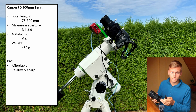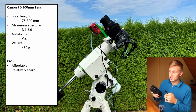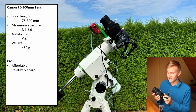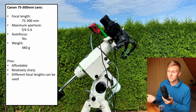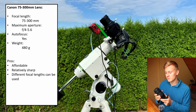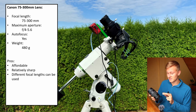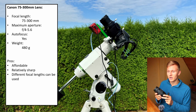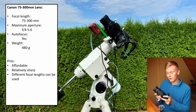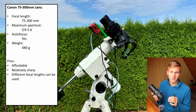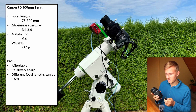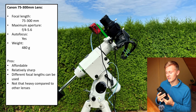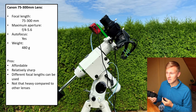Another advantage is that this lens is relatively sharp, especially when not using the maximum aperture — you will achieve great images with relatively good sharpness. You can also use different focal lengths, which is quite good, especially for beginners trying out different ranges. It's a great range between 75 and 300 millimeters for both wide-field images and longer focal length shots of smaller objects. Additionally, this lens is not that heavy, so you can attach it to smaller star trackers as well.